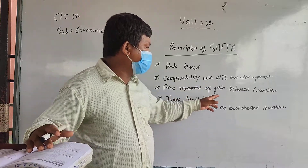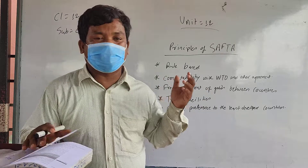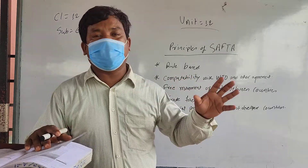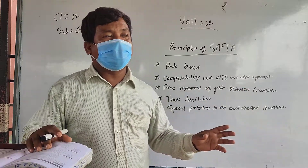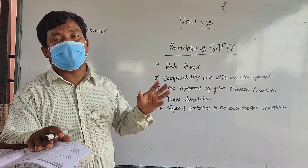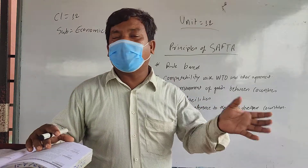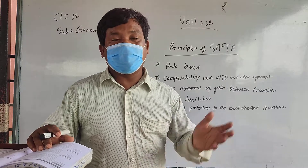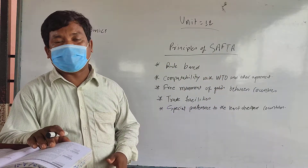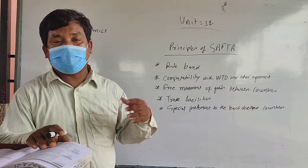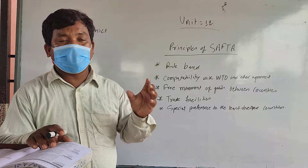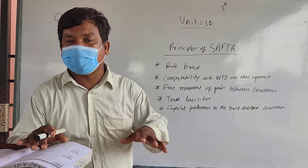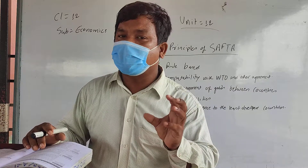Number three is free movement of goods between countries. The member countries of SAFTA — among those countries, there should not be any restriction on goods moving from one country to another. Among the 8 SAARC nations, goods of one country should move to another country easily, without any restrictions, without any difficulties. There should be free movement of goods and services, because that is the main objective.